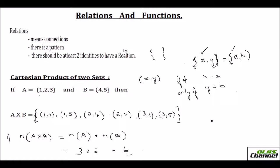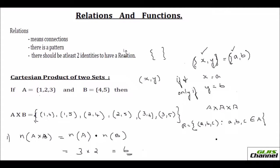The third thing is: just imagine you are going to find A cross A cross A — the Cartesian product thrice of the same set. Then the relation would be R equals ordered triplets (A, B, C), where A, B and C all belong to set A. This would be called ordered triplets.